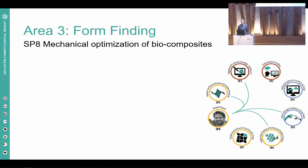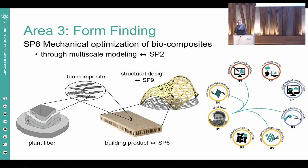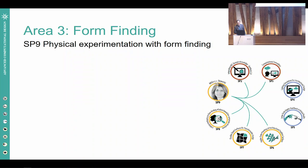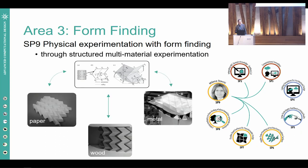Sub-project eight introduces the mechanical aspect into the project, in particular the mechanical behavior of plant-based biocomposites. A multi-scale model links the microstructure of these materials to the structural behavior of the final building, so that material properties can be used directly for form finding and structural design. Sub-project nine is dedicated to physical experimentation with form finding using multiple materials. This serves two purposes: testing new algorithmic tools from the other sub-projects in practice, and coming up with new ideas to explore mathematically.